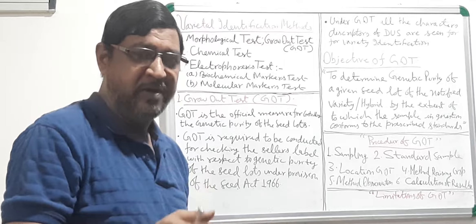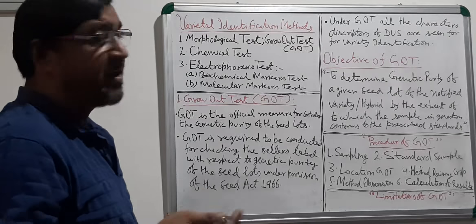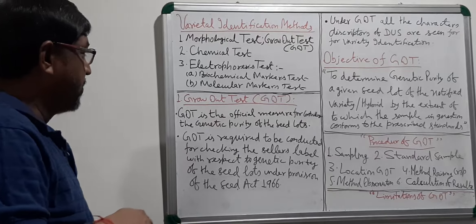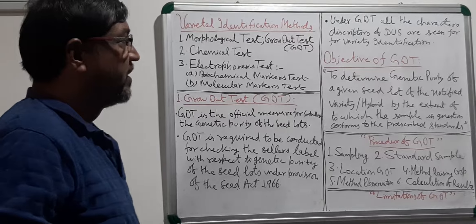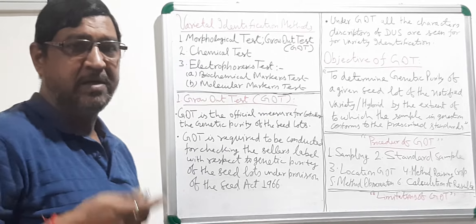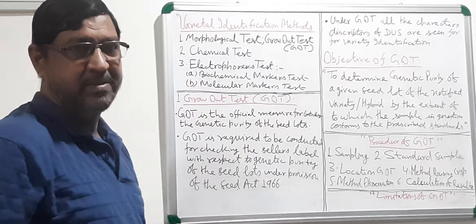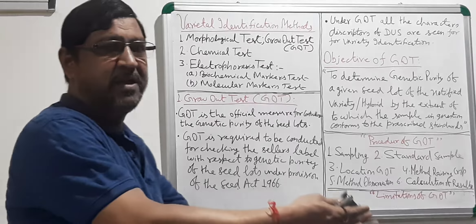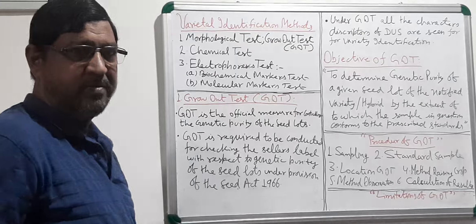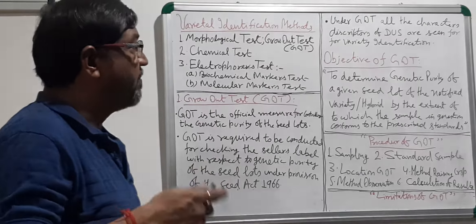Under the Seed Act 1966, for every crop, a minimum genetic purity is specified — for certified seed, foundation seed, breeder seed, and everything. When certified seeds are coming in the market and there is a dispute, such as a farmer complaining that the label states 99% genetic purity but there is a lot of mixture, that has to be tested through this method.